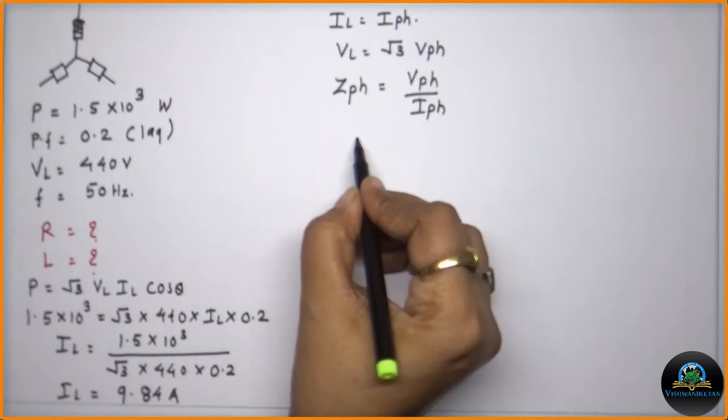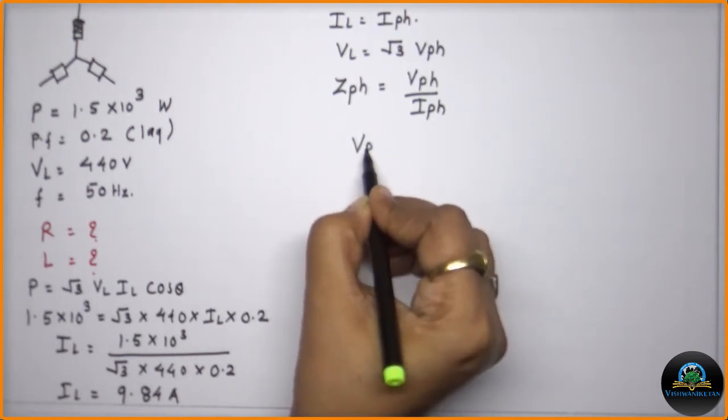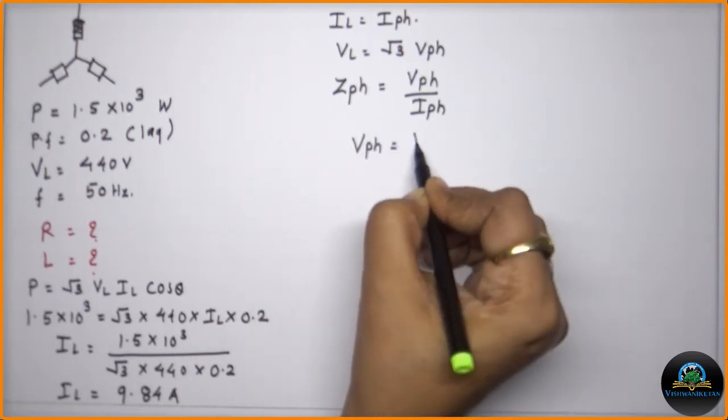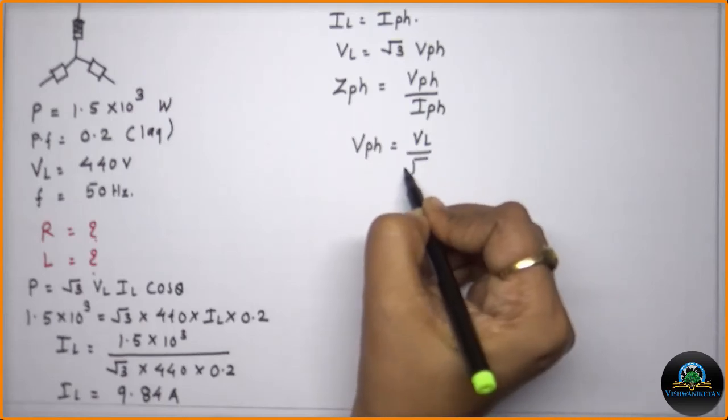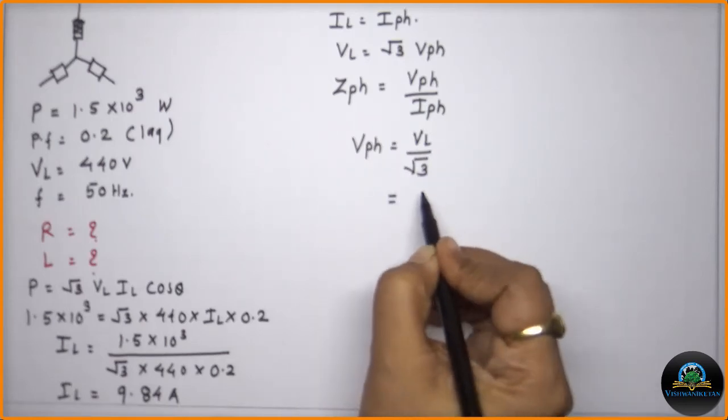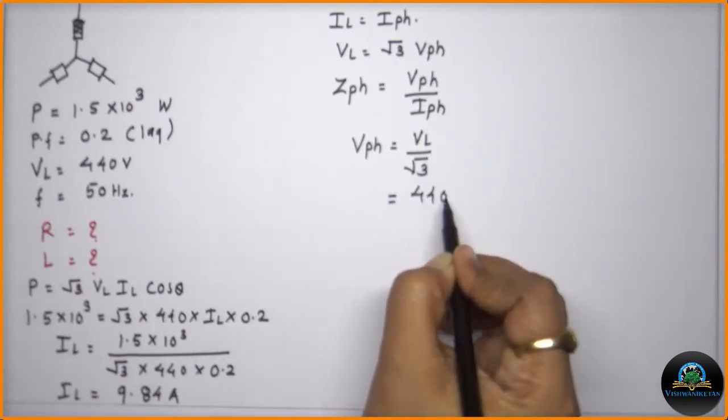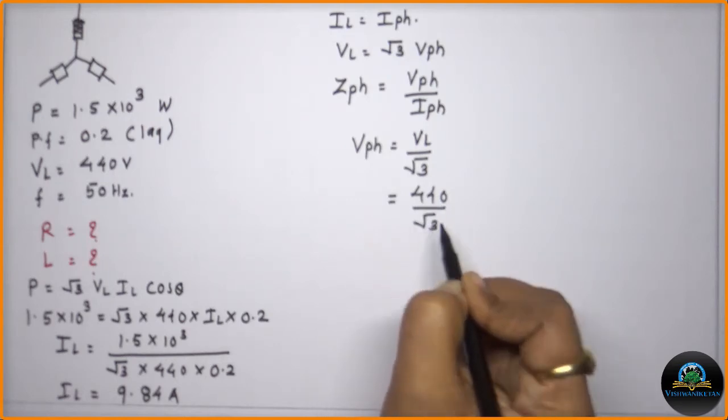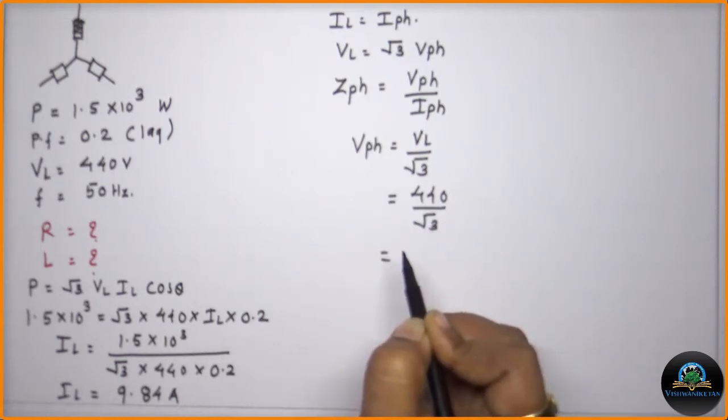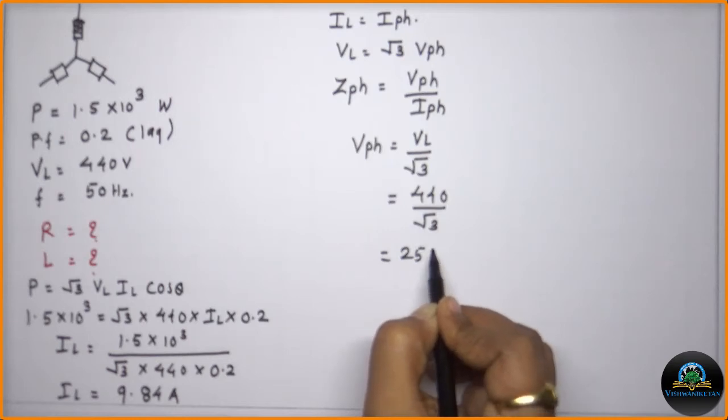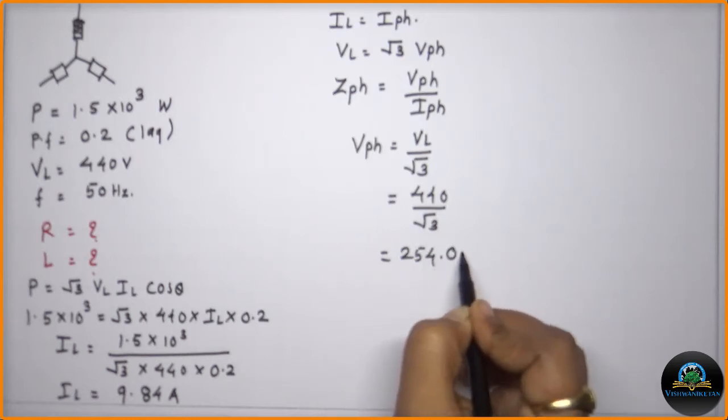So from this equation we can calculate that VPH is equal to VL upon root 3. VL is already mentioned which is 440 volt upon root 3, and the value is coming 254.03 volt.